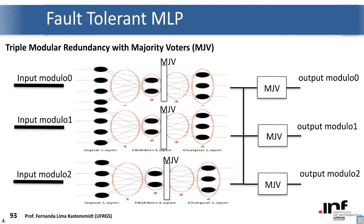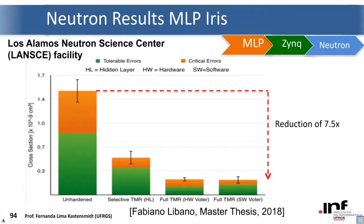In the same work, a TMR version of the iris network was implemented. Because the network was small enough, a full triple modular redundancy with majority voters was applied. In neutron experiments at Los Alamos, the unprotected version was compared to full TMR with majority voters implemented in hardware and software. The cross-section — and thus the vulnerability — was reduced by 7.5 times when adding total TMR protection, which is a good result.